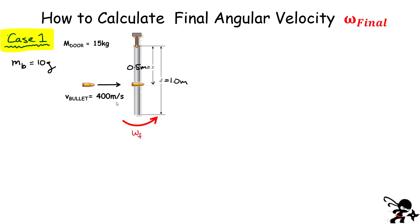We want to calculate the final angular velocity for case number one. We have an incoming bullet that's going to get stuck in the door, and then everything — the bullet and the door — is going to swing up at some angular velocity omega_F. The mass of the bullet is 10 grams, traveling at 400 meters per second. It gets lodged inside the door, which has a mass of 15 kilograms. I've given dimensions for the length of the door and where the bullet strikes — at the midpoint, which I'll call x.